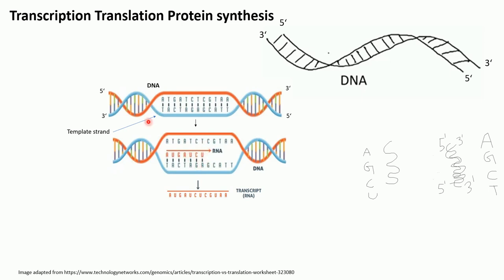So the base pairing rules for transcription are: A pairs with U, G pairs with C, C pairs with G, and T pairs with A. This is very important to understand. So our resulting transcript will be read out accordingly — for example, G from C, C from G, A from T, and U from A.